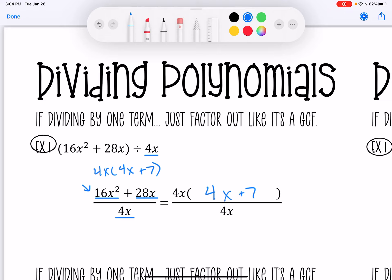What ends up happening is the 4x's right here, your GCF essentially, cancels out and you're left with the answer 4x plus 7. And that's dividing polynomials.